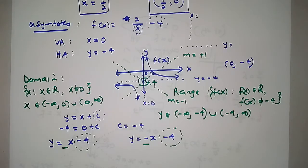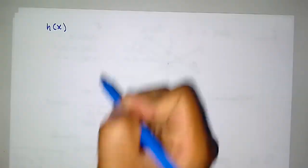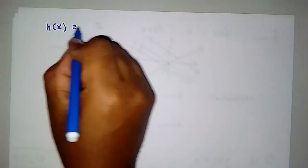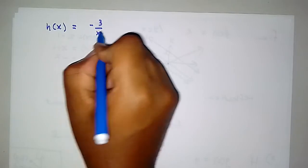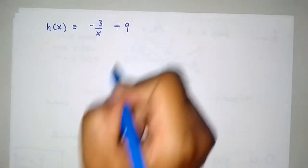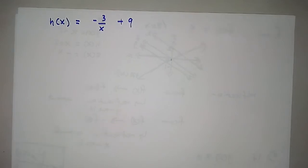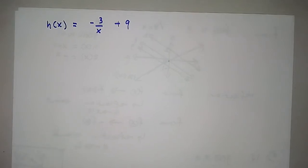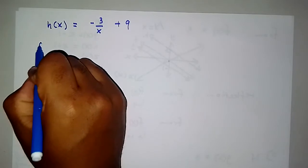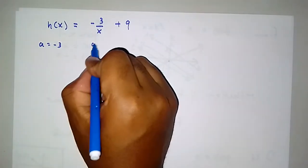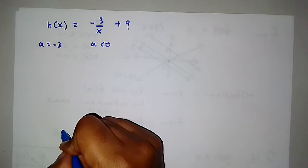Let's do another example, which is a bit different. We have h of x equals negative 3 over x plus 9, and we are told to sketch the function. Here a equals negative 3, so a is less than 0. This means we expect the function in the second and fourth quadrants.